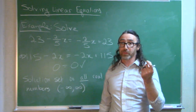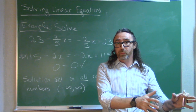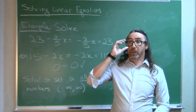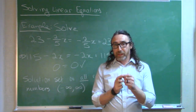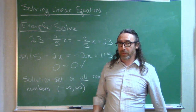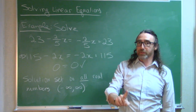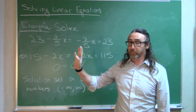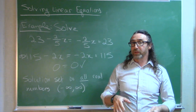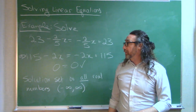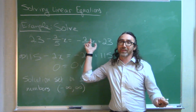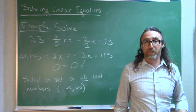Remember the basic strategy for solving linear equations: get all terms with the variable to one side, everything without the variable to the other side. Remember how to deal with fractions — the technique of clearing denominators really simplifies your computations. Typically when you solve a linear equation you're going to get exactly one solution, but there are some outlier cases: you could have a linear equation with no solutions, which represents parallel lines graphically, or you could have a linear equation with infinitely many solutions where the left-hand side is identically equal to the right-hand side for all values of x.